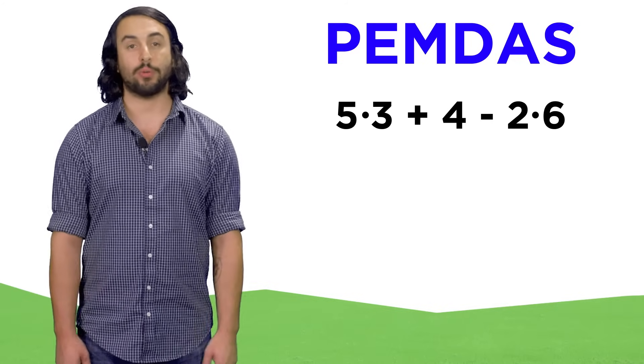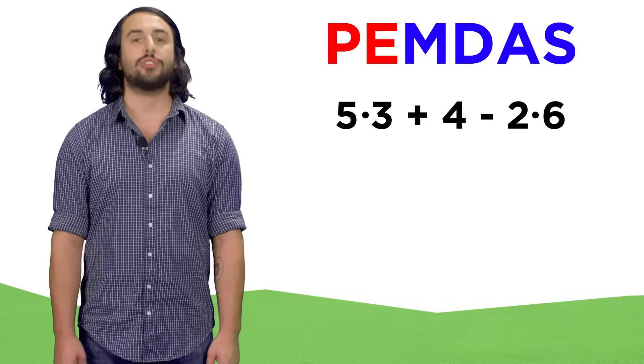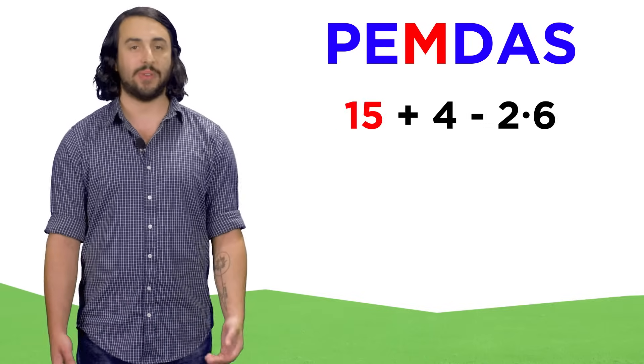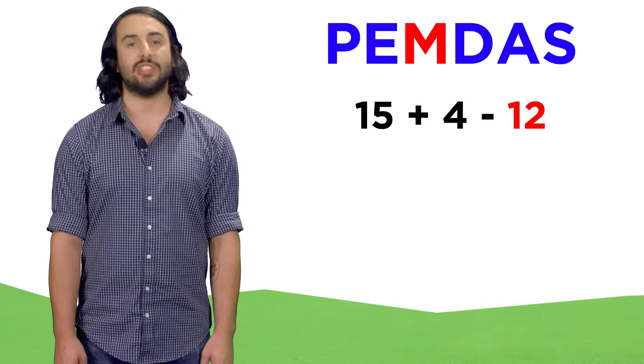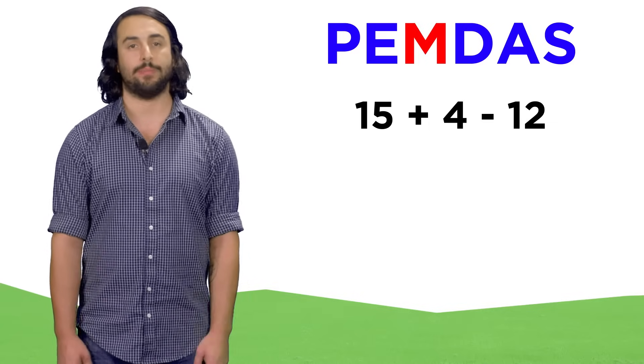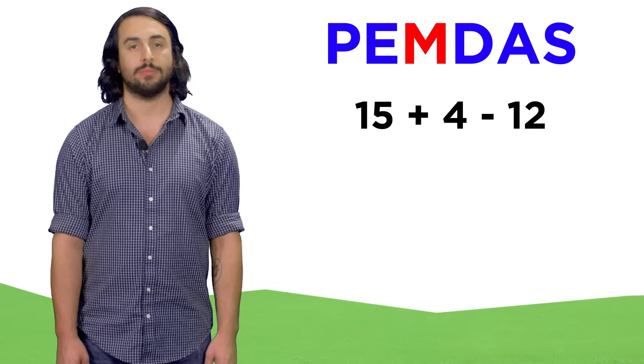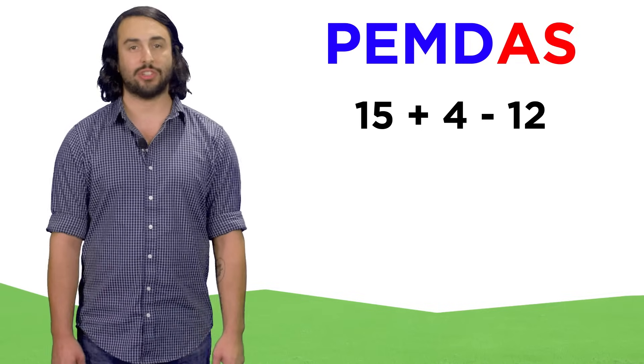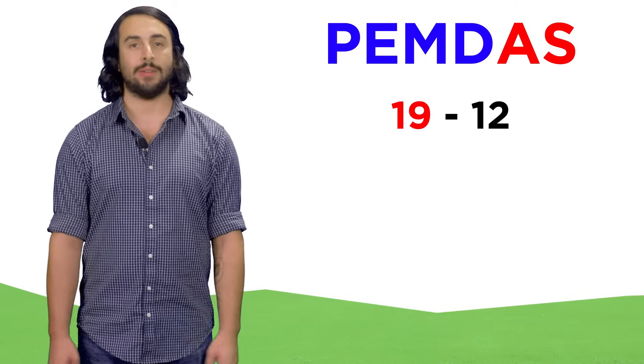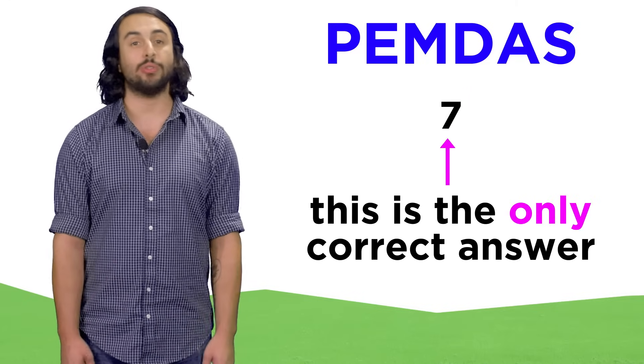Let's apply this method to our previous example. There are no parenthetical terms or exponents, so let's jump straight to the multiplication. Five times three is fifteen, and two times six is twelve. We must do this before doing any addition. Now this reads fifteen plus four minus twelve. Now it's all addition and subtraction, so we just go left to right. Fifteen plus four is nineteen, minus twelve is seven, and according to PEMDAS, this is the only correct answer.